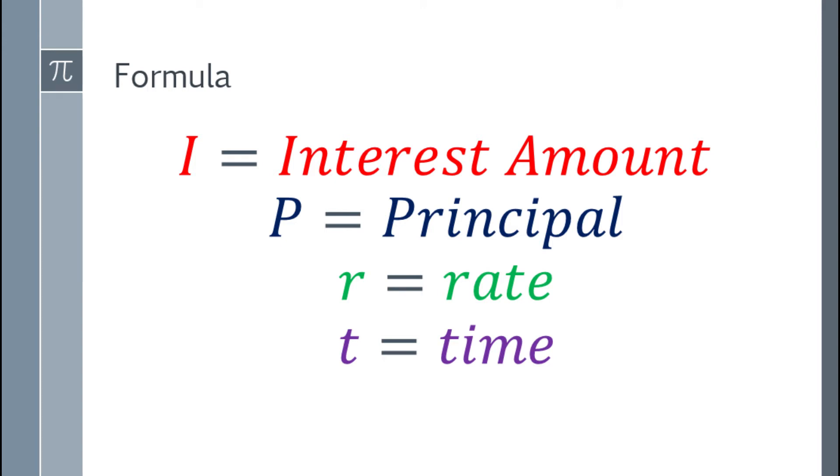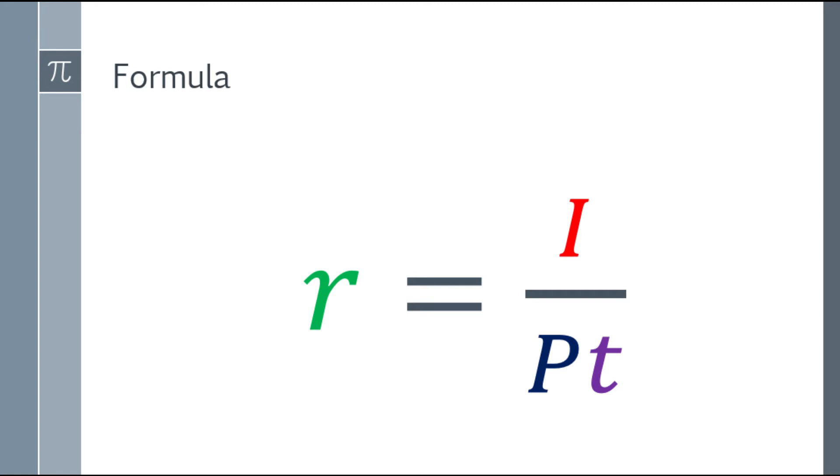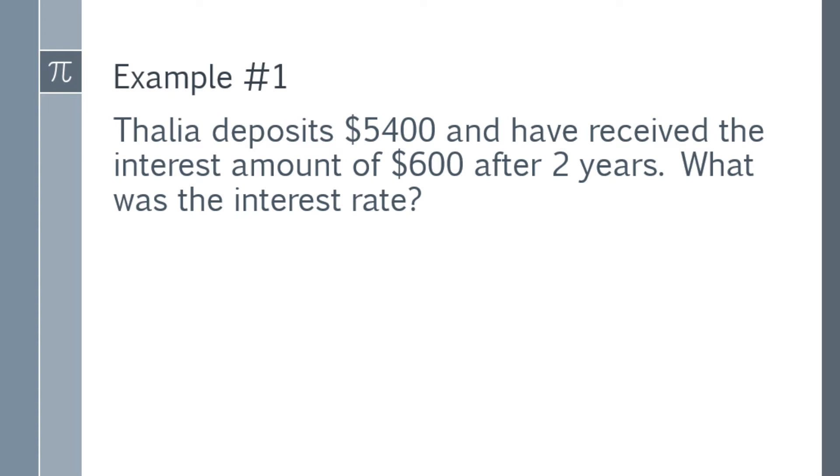For rate, the formula will be R equals I over the quantity PT. So let's have the first example. Thalia deposits $5,400 and have received the interest amount of $600 after 2 years. What was the interest rate?